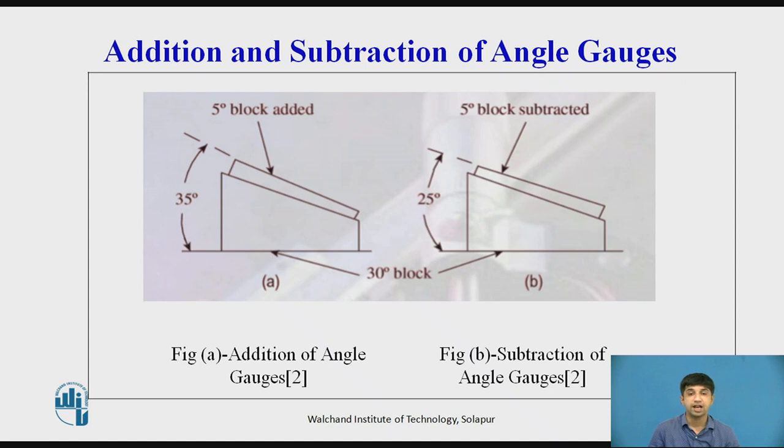When the angles of individual gauges are to be added, then the V of all should be in line. When any angle is to be subtracted, its engraved V should be in another direction. So here this is the 30 degree block and 5 degree block. So this is the V and this is another 5 degree block. This is the V I am getting here.